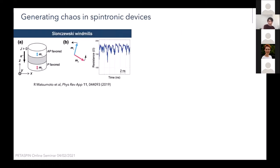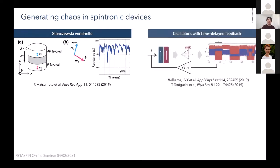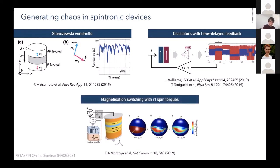How does one generate chaos in spintronics? One approach uses coupled magnetization dynamics in a spin-torque type system — a Slonczewski–Berger type bilayer — where applying current through the bilayer structure causes mutual spin torque to produce complicated dynamics in m1 and m2, the magnetizations of the two layers. We've also shown that applying time-delay feedback into a simple oscillatory system can generate chaos for certain amplification and delay times, and chaos has been seen in switching processes when spin torques are applied.